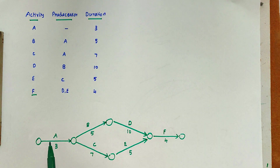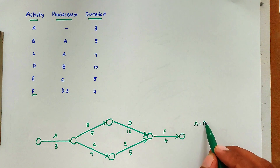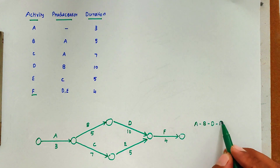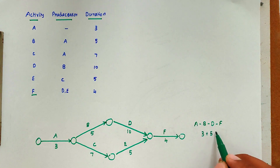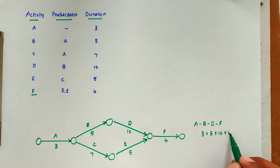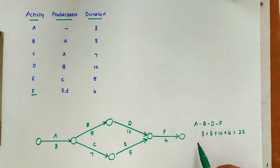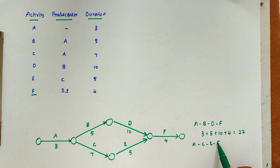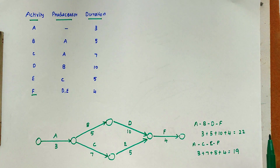Now we can write out the paths. There are two paths. The first path is A–B–D–F with corresponding durations 3 + 5 + 10 + 4, giving a total duration of 20. The second path is A–C–E–F with corresponding durations 3 + 7 + 5 + 4, equal to 19.